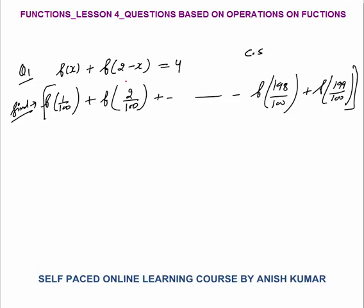Now the question says that f(x) + f(2 − x) = 4. You need to find the value of f(1/100) + f(2/100) + ... + f(199/100). Straightaway, without wasting any time, put x = 1/100. You will get f(1/100) + f(2 − 1/100), which is f(199/100), equals to 4.